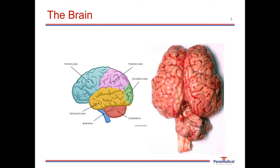The brain is one of the organs we know least about in medicine. The cerebrum is where we have the most complex thought, processing language, speech, sight, hearing, emotions, artistic ability and creativity, reasoning, memory, mathematical problem solving, and spatial awareness — among many other capabilities.